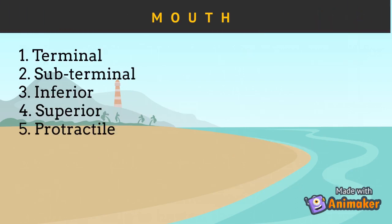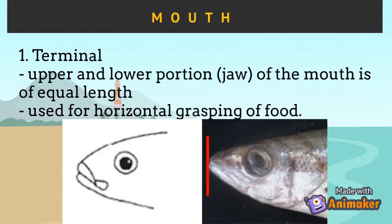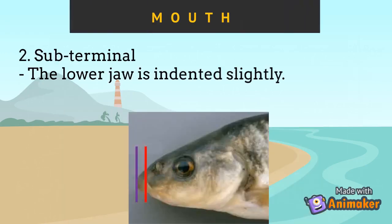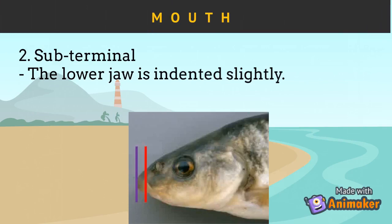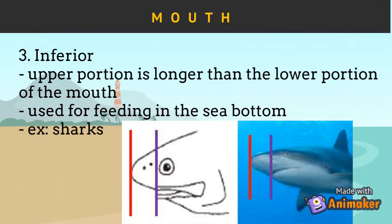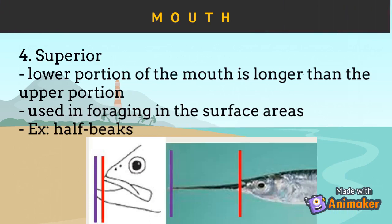There are five types of mouth in fish: terminal, subterminal, inferior, superior, and protractile. Terminal mouths have upper and lower jaws of equal length, used for horizontal grasping of food. Subterminal mouths have a lower jaw that is slightly indented. Inferior mouths have an upper jaw that is longer than the lower portion, used for feeding on the sea bottom — sharks have this type. Superior mouths have a lower portion longer than the upper portion, used for foraging at the surface — half beaks have this mouth type.